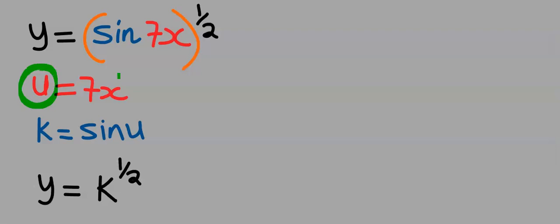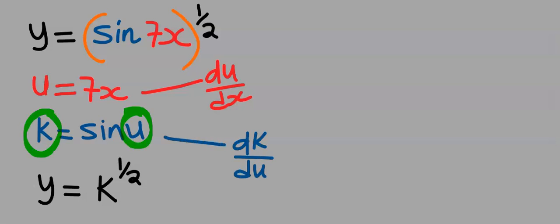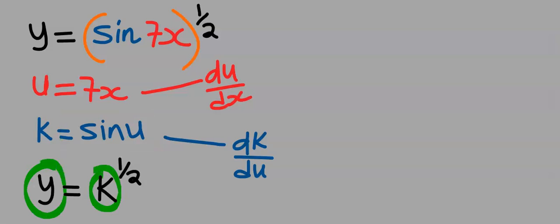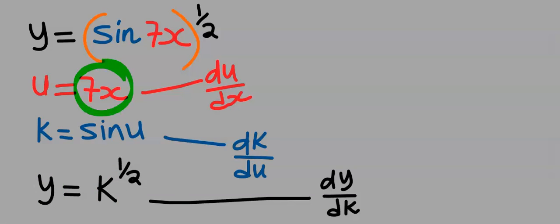This is u and this is x, so we have du/dx. This is k and this is u, so we have dk/du. This is y and this is k, so we have dy/dk. Next, differentiate 7x and your answer is 7.